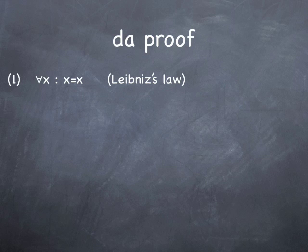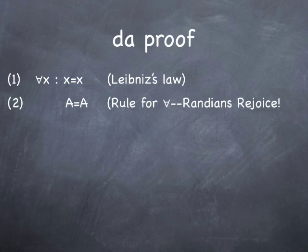Now our groovy rule for the application of the universal quantifier says that we can just take x in this formula, replace it by any proper name whatsoever. I'll use the proper name A, just the capital letter A. So this is for all you Randians out there. Mr. Cropper, if you got the big ears on, this one's for you. If for all x, x equals x is true, which it is, that means that A equals A is true.